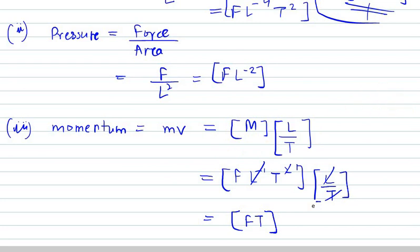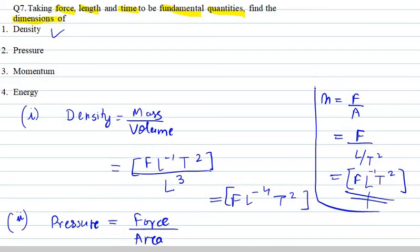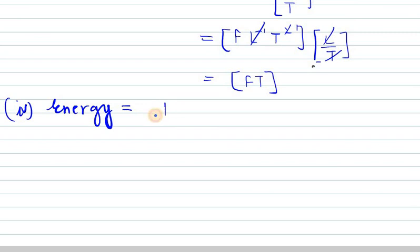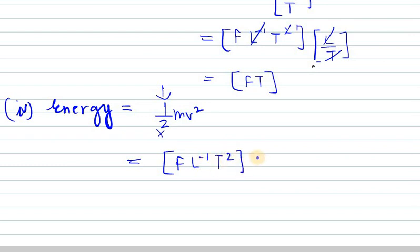So the dimension of momentum is FT. Next we have energy. Energy is half MV squared — the constant half doesn't affect dimensions. Mass is FL⁻¹T², and velocity squared is L²T⁻².